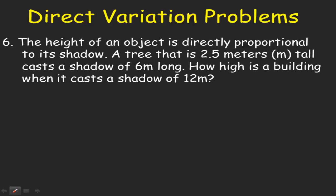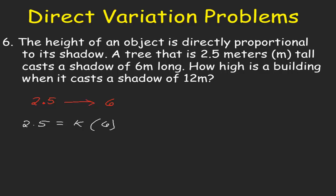Problem number 6. The height of an object is directly proportional to its shadow. A tree that is 2.5 meters tall casts a shadow of 6 meters long. How high is a building when it casts a shadow of 12 meters? So we have 2.5 meters. Our direct variation equation will be 2.5 equals to the constant of proportionality k multiplied by 6. To find for the value of k, we have to cancel out 6.